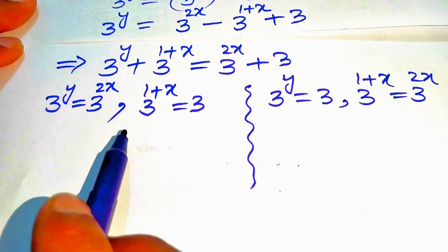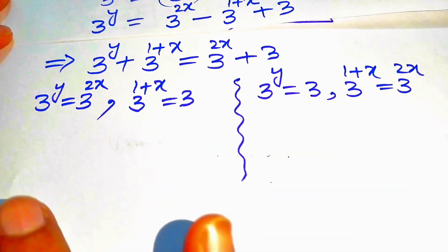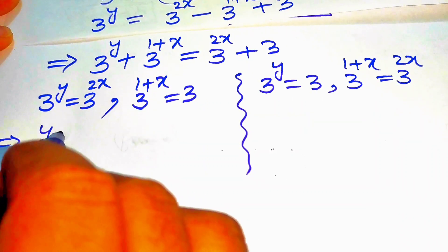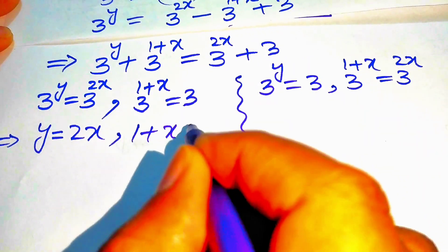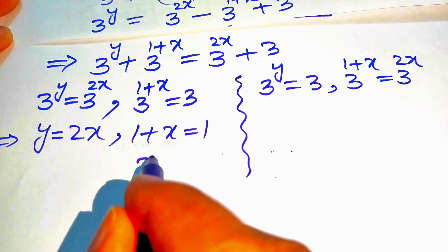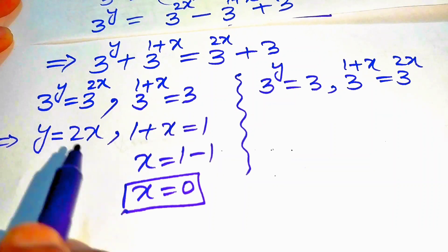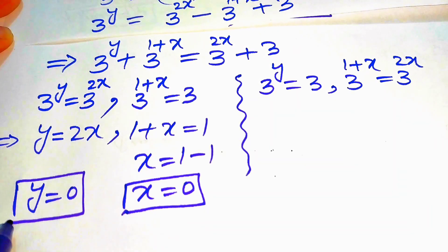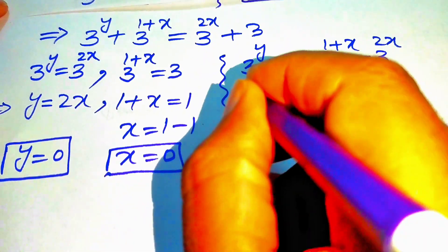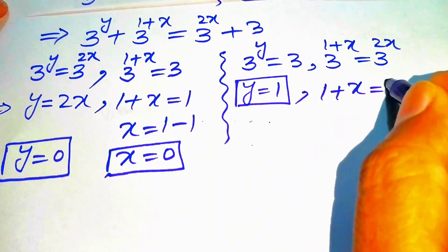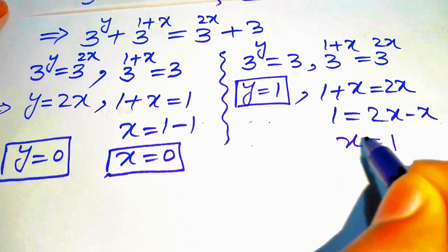In case 1, equating exponents: y equals 2x, and 1 plus x equals 1, so x equals 0 and y equals 0. In case 2, y equals 1, and 1 plus x equals 2x gives 1 equals 2x minus x, so x equals 1 and y equals 1.